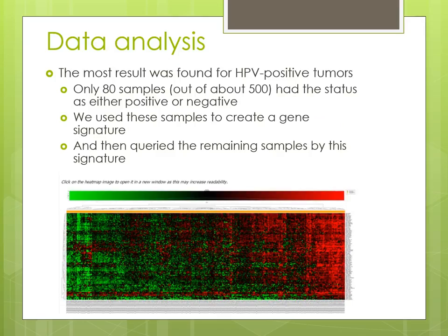For NGS data available through TCGA, we chose to load that as VCF files — that's my preferred method. We had essentially three components to that NGS stream: DNA-seq data, RNA-seq data, and RNA-seq somatic mutation data.